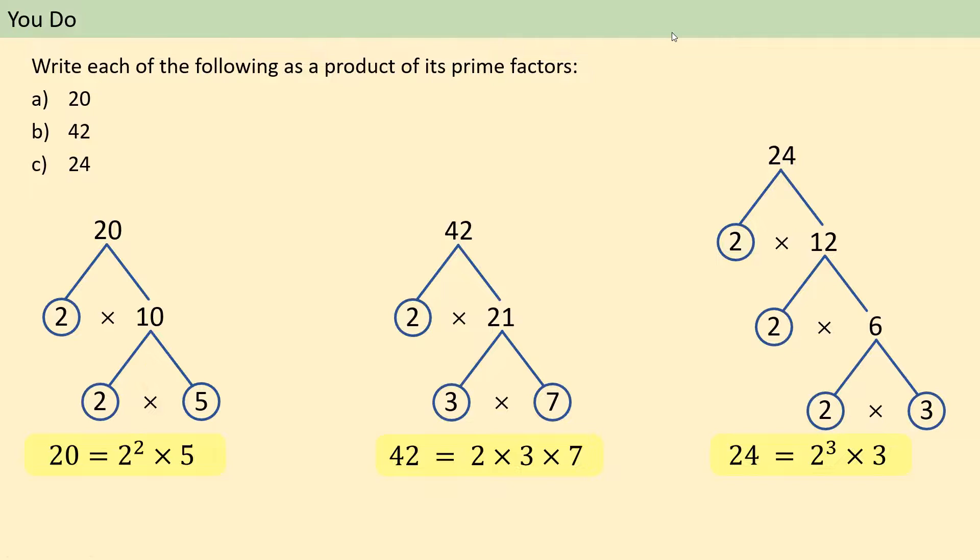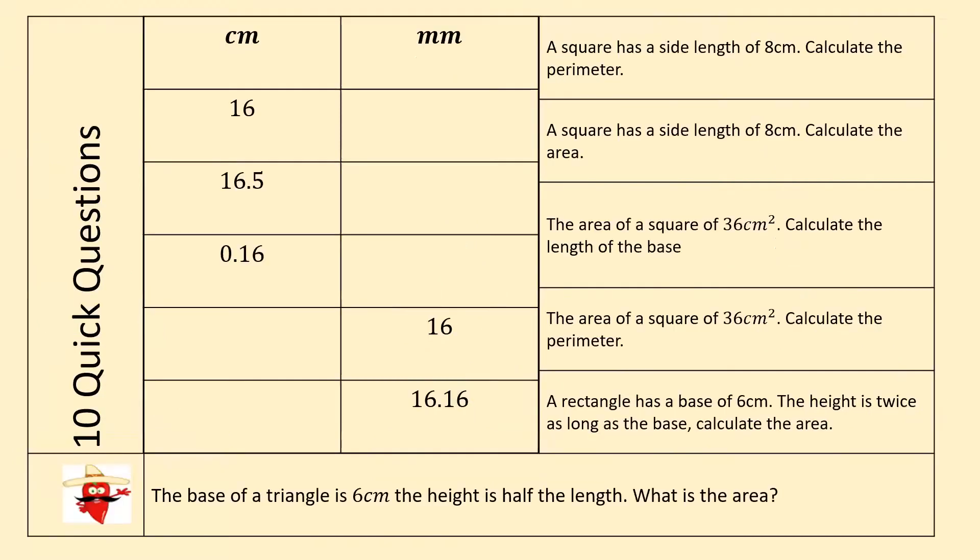So we've got 10 quick questions coming up. We're going to do some unit conversions, specifically from centimeters to millimeters. And we're also going to have a look at some problems involving area and perimeter of squares. OK, so remember which ones you multiply for and which ones you add for. So we're going to get started in 3, 2, 1. Off you go.